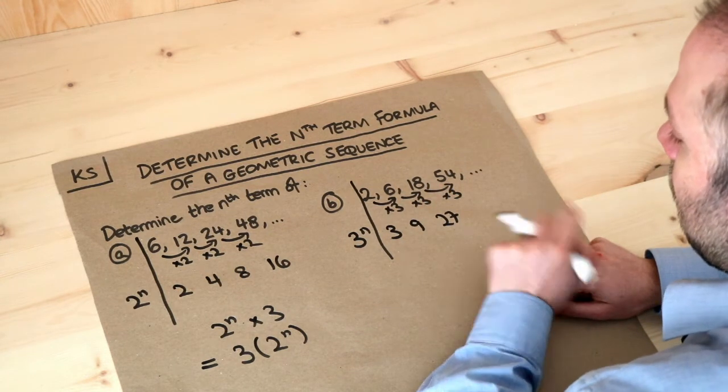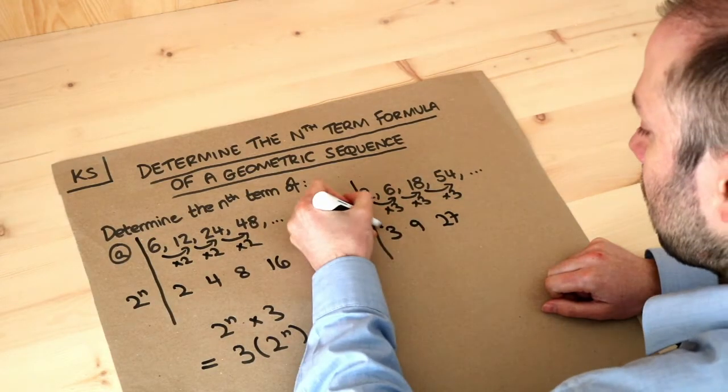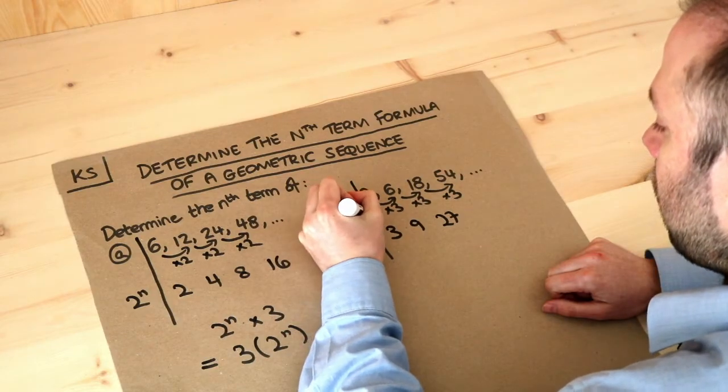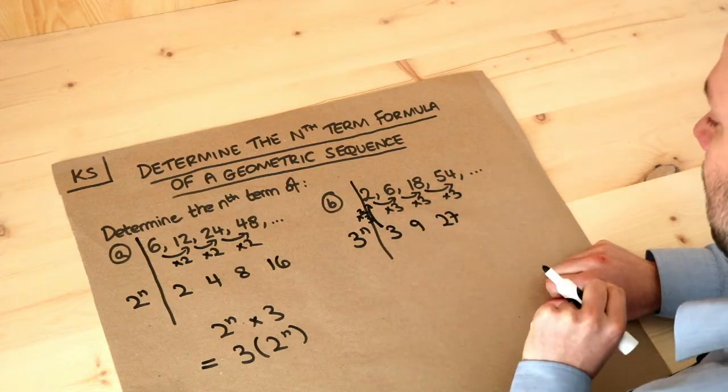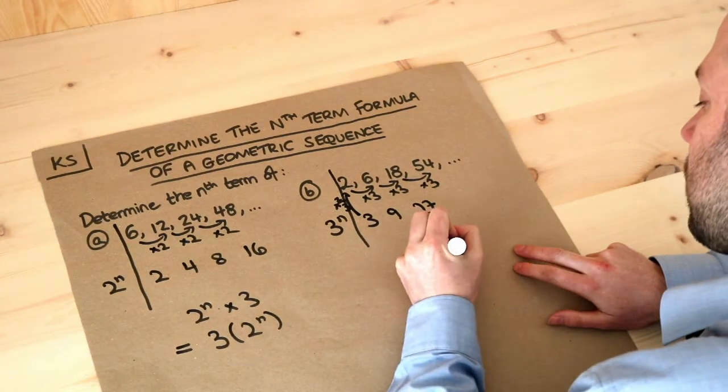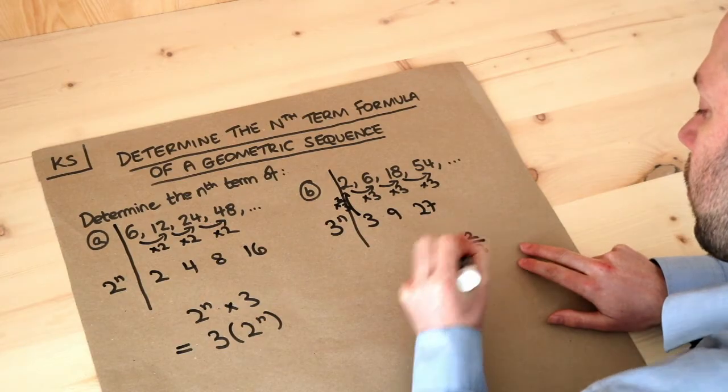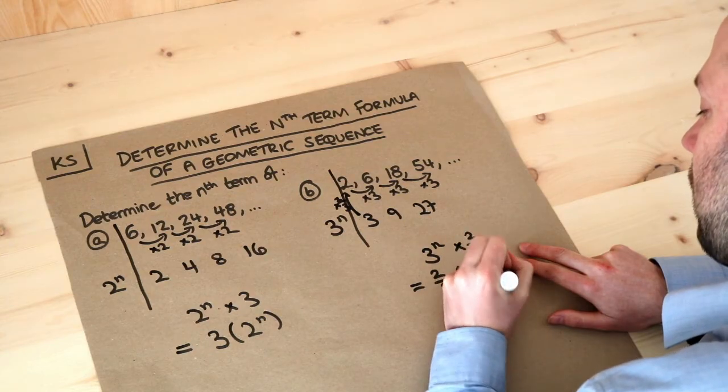Can you see that this number is 2 thirds of that? We can times 3 by 2 thirds to get to 2. We can times 9 by 2 thirds to get to 6. We can times 27 by 2 thirds to get to 18. Therefore, our formula is going to be 3 to the n times 2 thirds, or we could write that as 2 thirds in brackets 3 to the power of n.